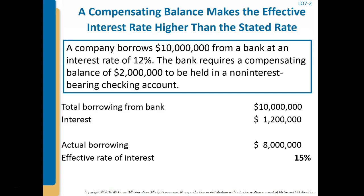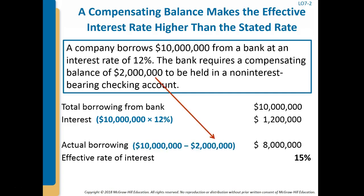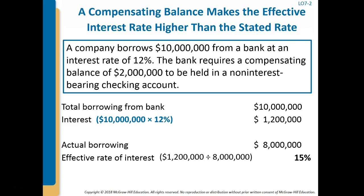For example, suppose a company borrows $10 million at 12%, paying $1,200,000 per year in interest. If the bank requires a compensating balance of $2 million in a non-interest-bearing account, the company is really only using $8 million — resulting in an effective interest rate of 15% ($1,200,000 ÷ $8,000,000), which is higher than the stated 12%.